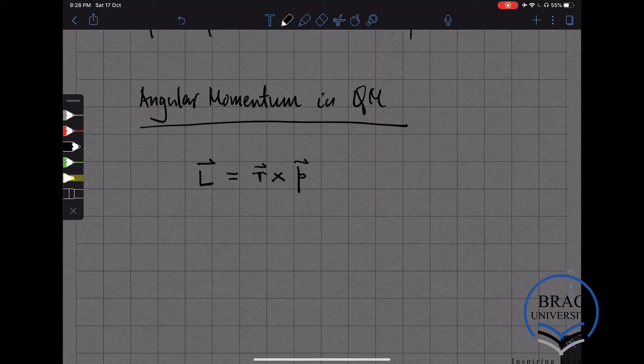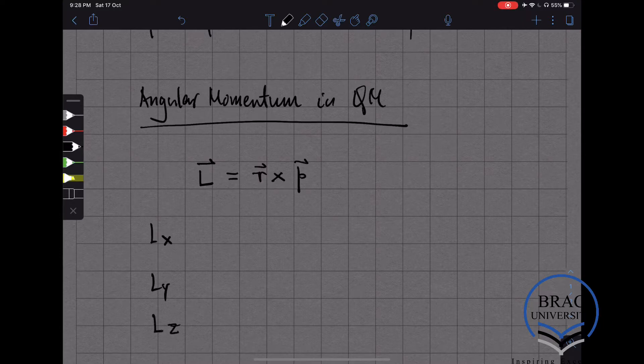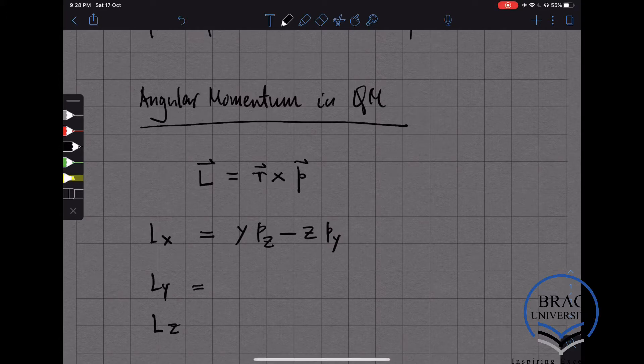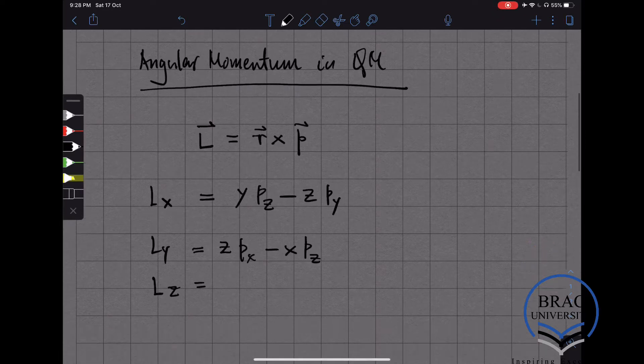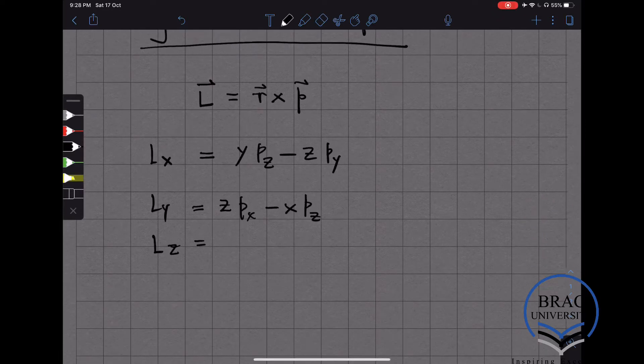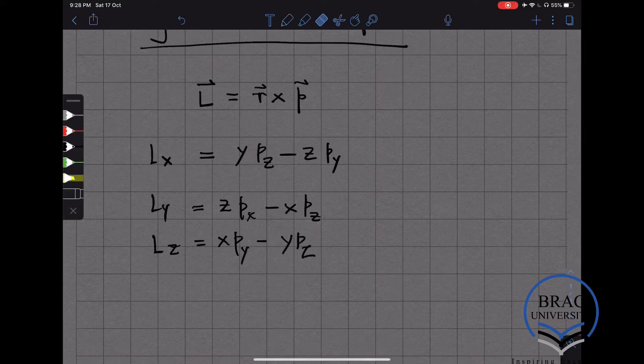Because L is a three component operator, it's actually a collection of three operators: Lx, Ly, and Lz. Lx is given by y times pz minus z times py. Ly is given by z times px minus x times pz. And Lz is given by x times py minus y times px.